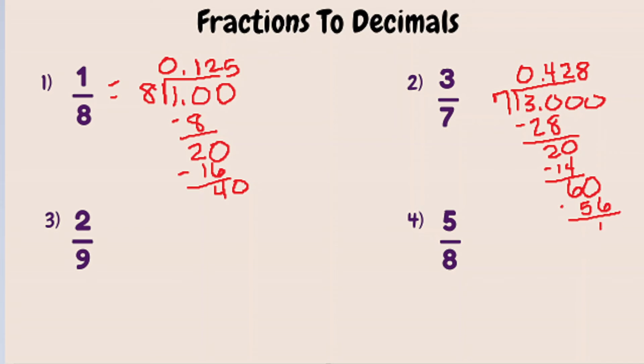And we can keep going on, but we'll stop there. So three sevenths is equal to 0.428.